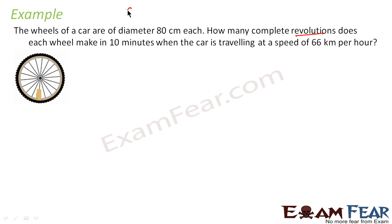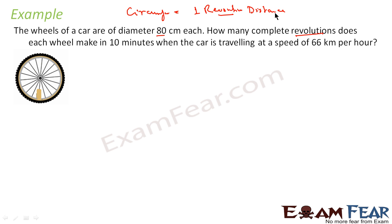We know that circumference is nothing but one revolution — the distance covered in one revolution is called circumference. Since we know the diameter, circumference is nothing but π times d, so we can find the circumference. The distance covered by the car in one revolution is equal to its circumference.